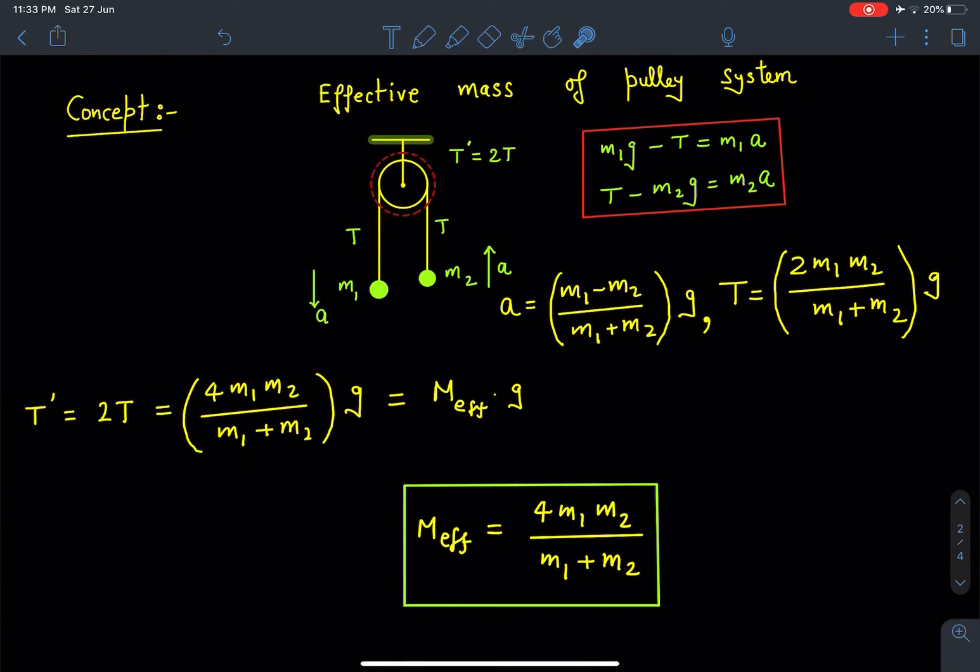For a standard pulley mass system, as you can see in the diagram, there is a pulley and two masses m1 and m2 are connected with the help of a string. Here we are trying to define the effective mass of the pulley.